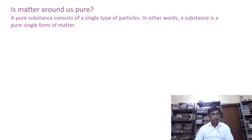Now, talking about impure substances, obviously an impure substance will not consist of a single type of particle. It will consist of more than a single type of particle—that means two or three types of particles. Such impure substances are also called mixtures.